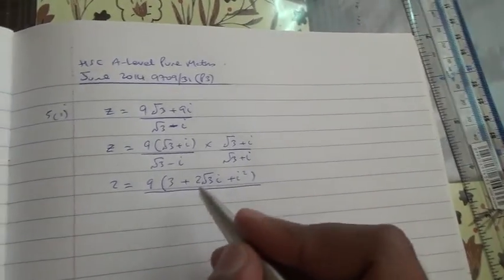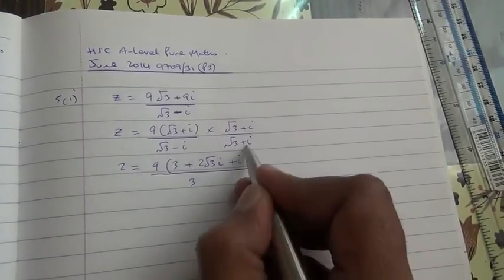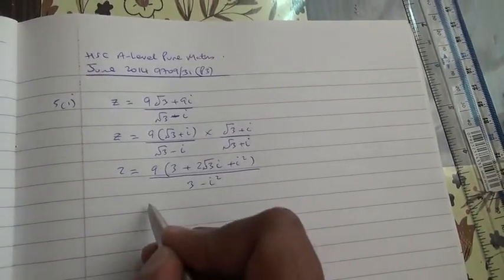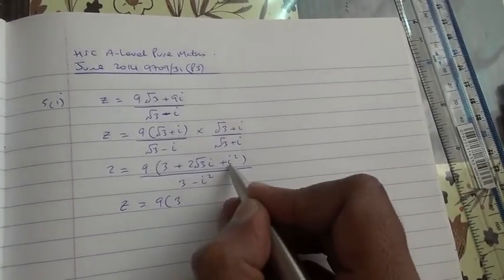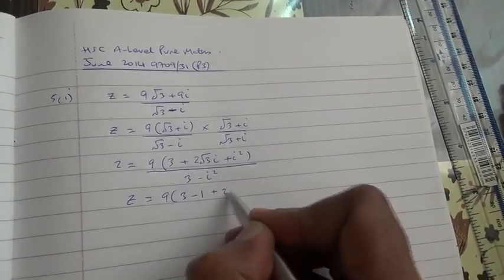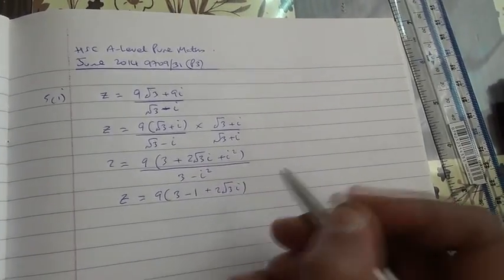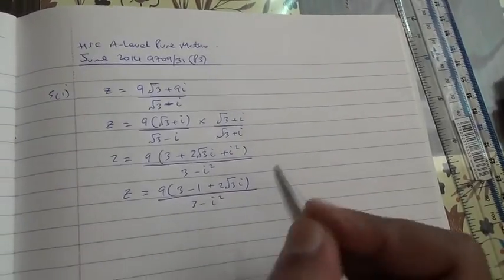Divided by √3 times √3 is 3, minus i times i is minus i². So, z equals 9 into 3, i² is basically minus 1, so minus 1 plus 2√3i, divided by 3 minus i².